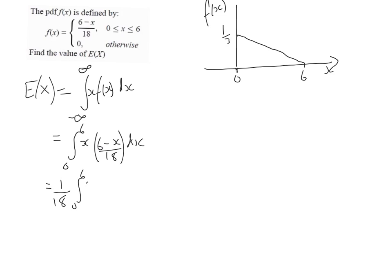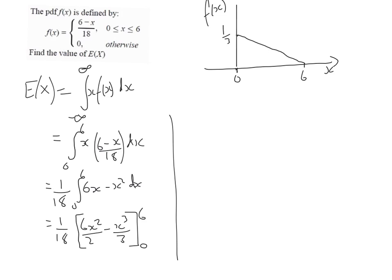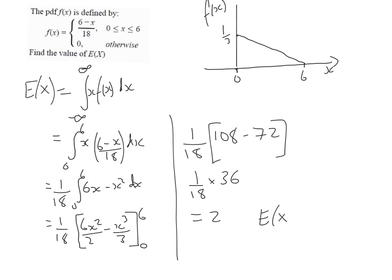Between 0 and 6 we have 6x minus x squared. Integrating, we get 1/18 times (6x² over 2 minus x³ over 3), evaluated between 0 and 6. Substituting in 6: 6 times 216 divided by 2 is 108, minus 216 divided by 3 which is 72. That gives us 1 over 18 times 36, which equals 2. So the expectation of X in this example is 2.